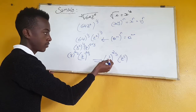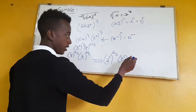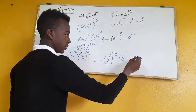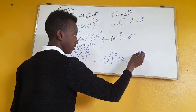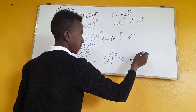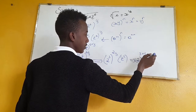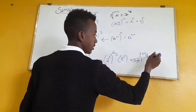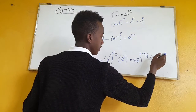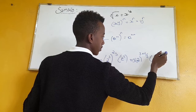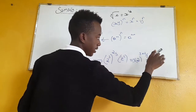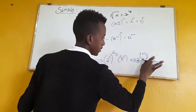So that's 2 to the power of 3, the whole power of 2 over 3. This implies: 2 to the power of 3 times 2 over 3, times z squared. I believe it's times z squared.